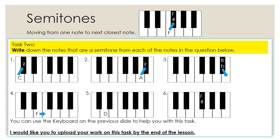So for task two, I'd like you to write down the notes that are a semitone from each of the notes in the question below. For some of these tasks, I put an arrow, which will help you work out which is the semitone movement. As we go along, it gets a bit more difficult and you'll see that there are no arrows. So you need to work out which is the semitone yourself without this little bit of help. You can use the keyboard on the previous slide to help you with this task.